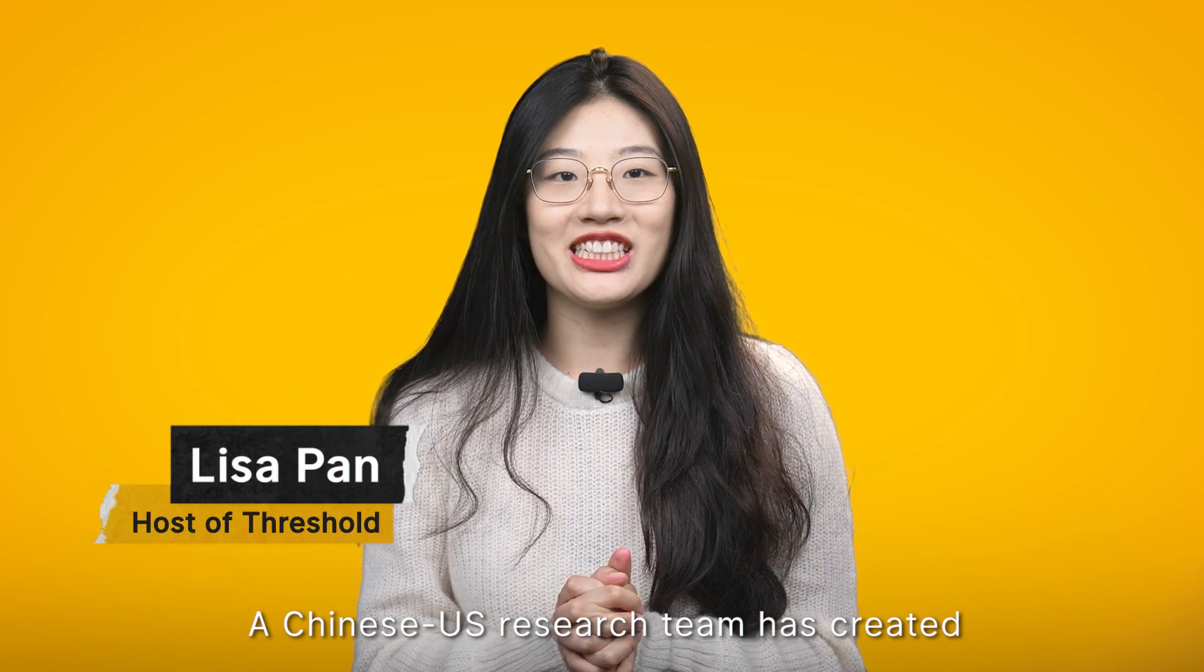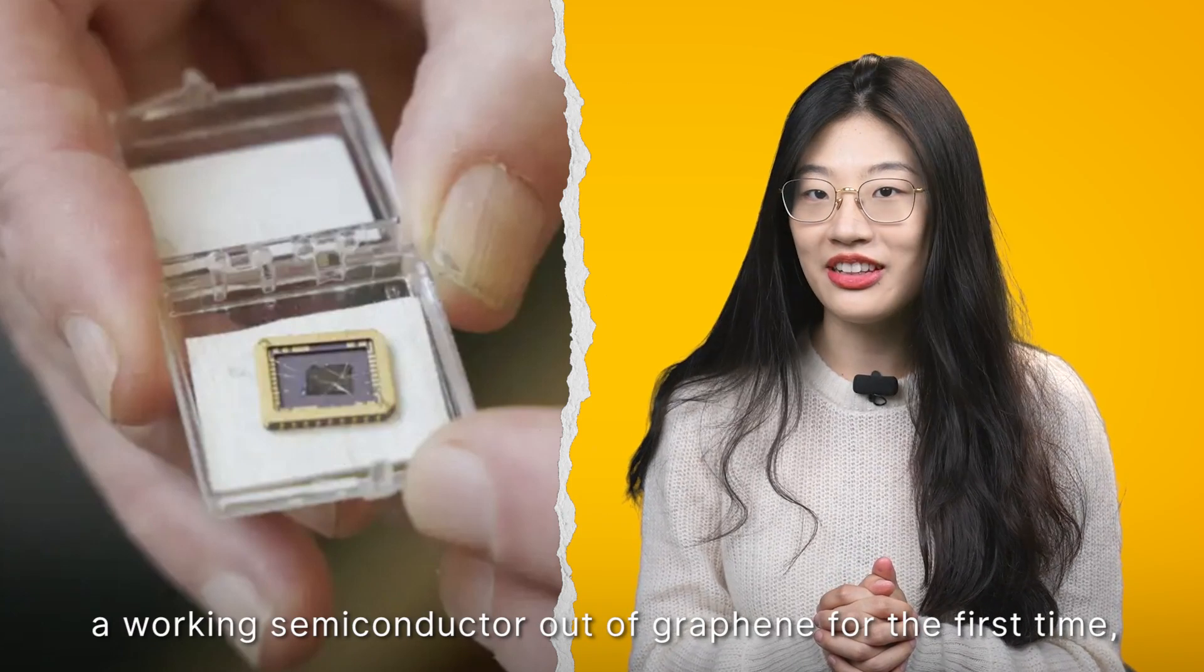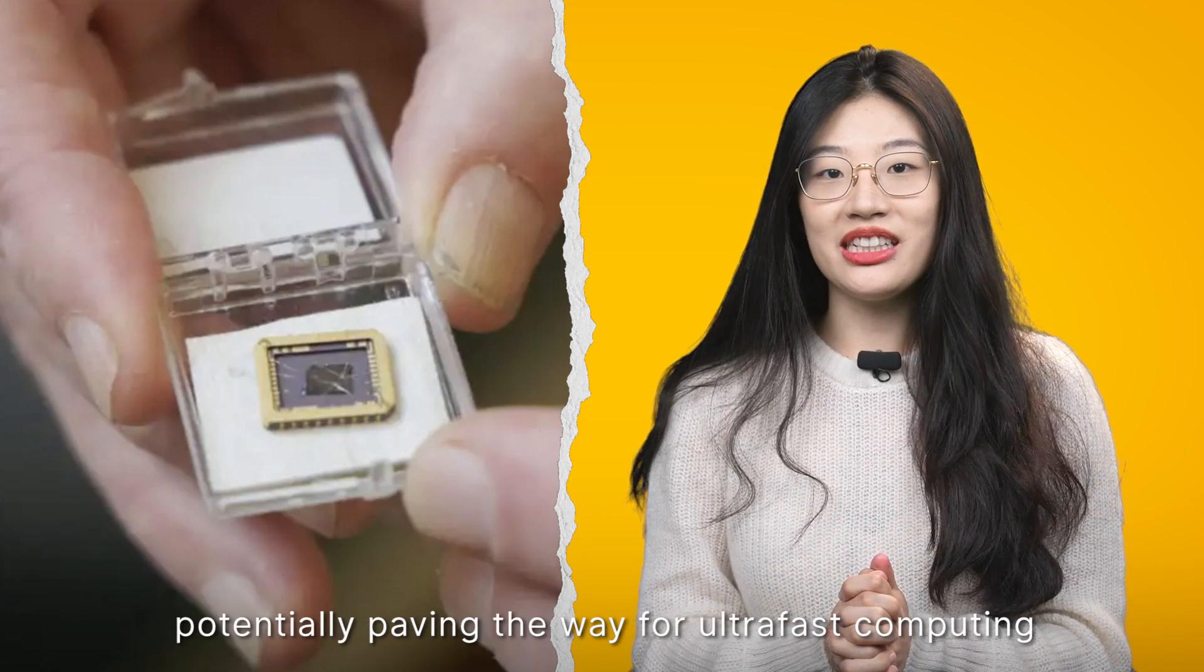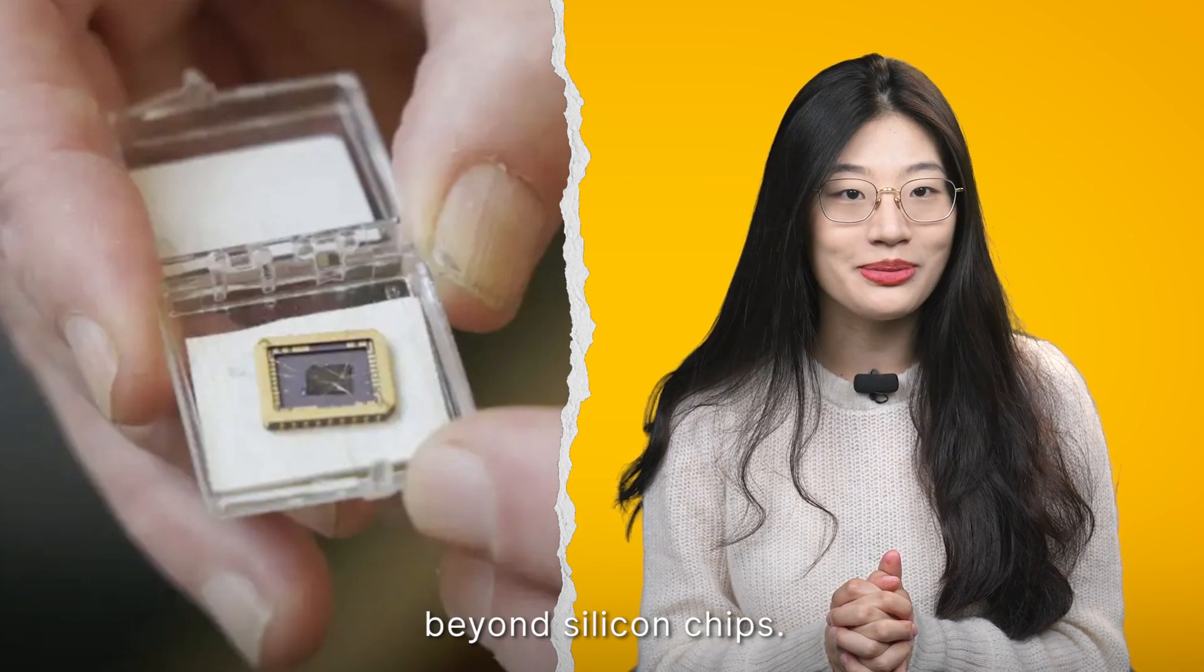A Chinese-US research team has created a working semiconductor out of graphene for the first time, potentially paving the way for ultra-fast computing beyond silicon chips.